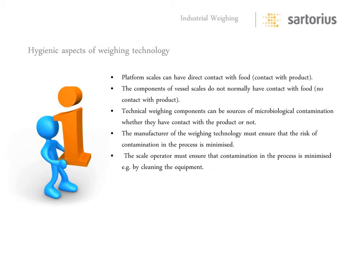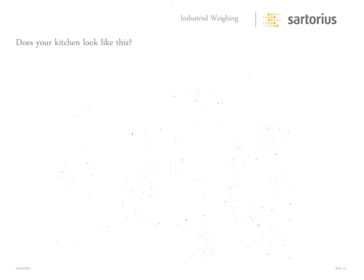So the hygienic aspects of weighing technology: platform scales can have direct contact with food, and some components don't actually have contact with food, yet their presence can influence the safety of the product being weighed. Technical weighing components can be sources of bacterial contamination whether they contact food or not. The manufacturer of the weighing technology must ensure that the risk of contamination in the process is minimized, and the scale operator must also ensure that contamination is minimized through the cleaning processes used.